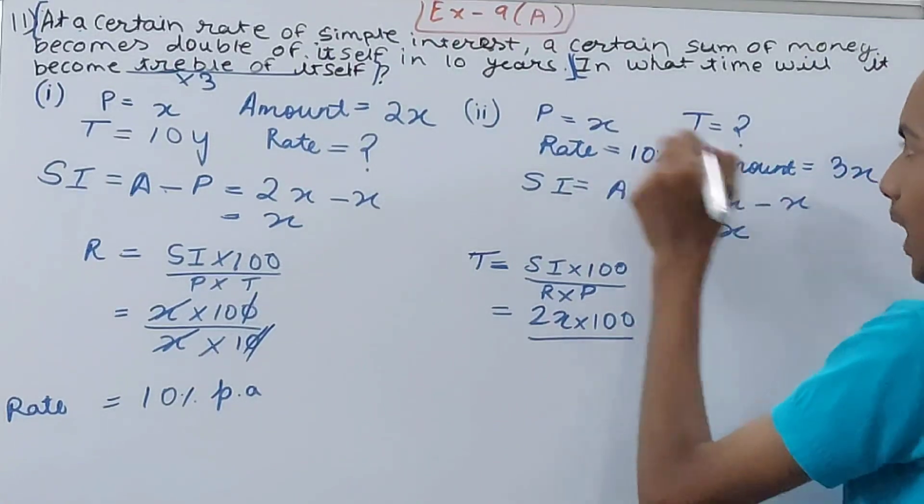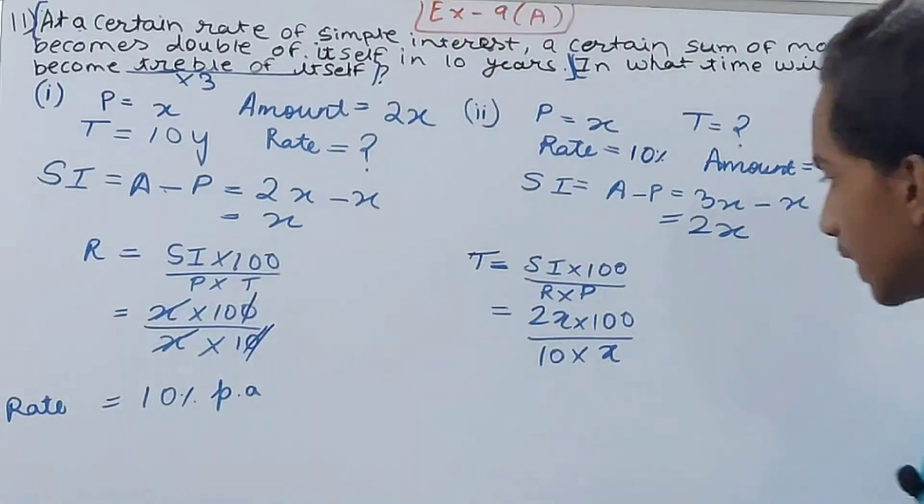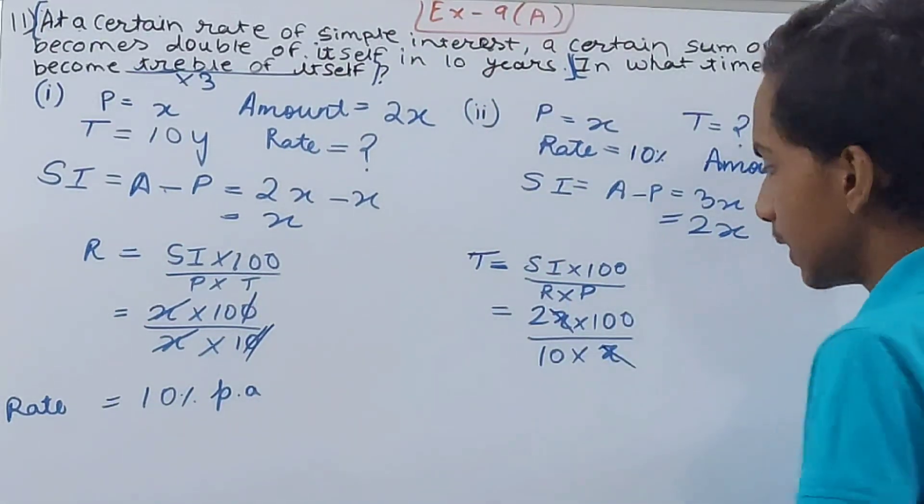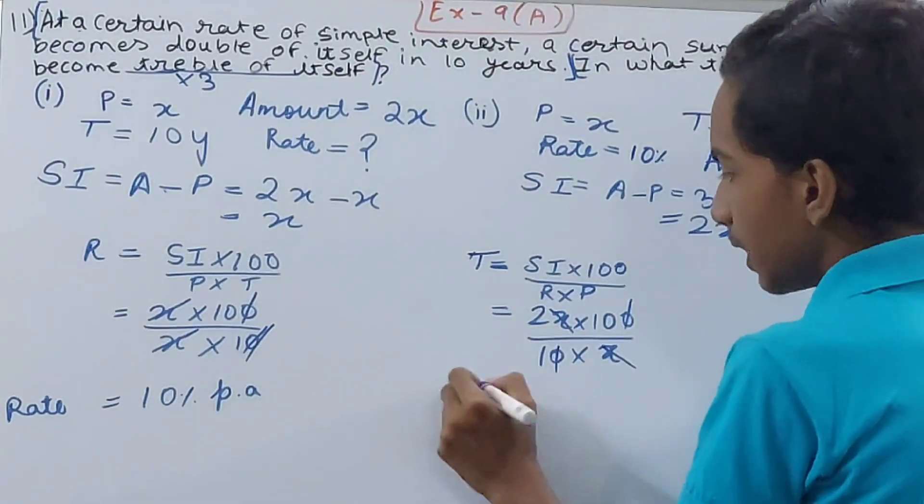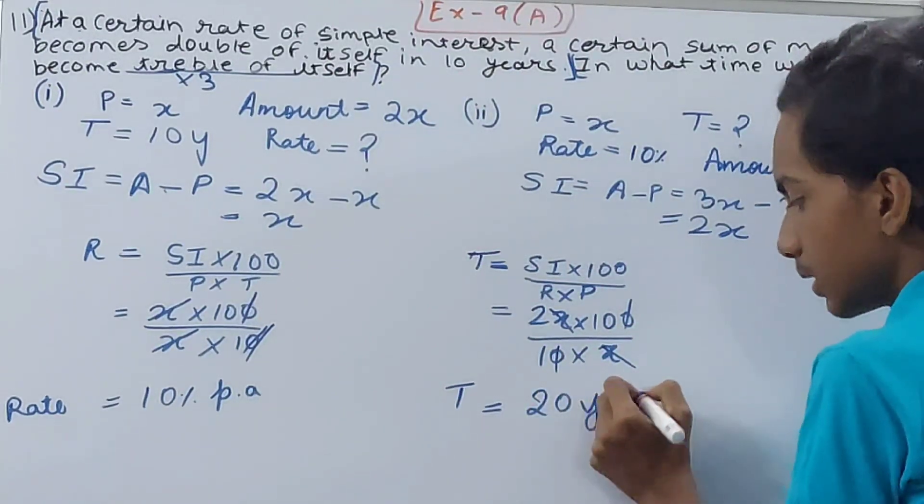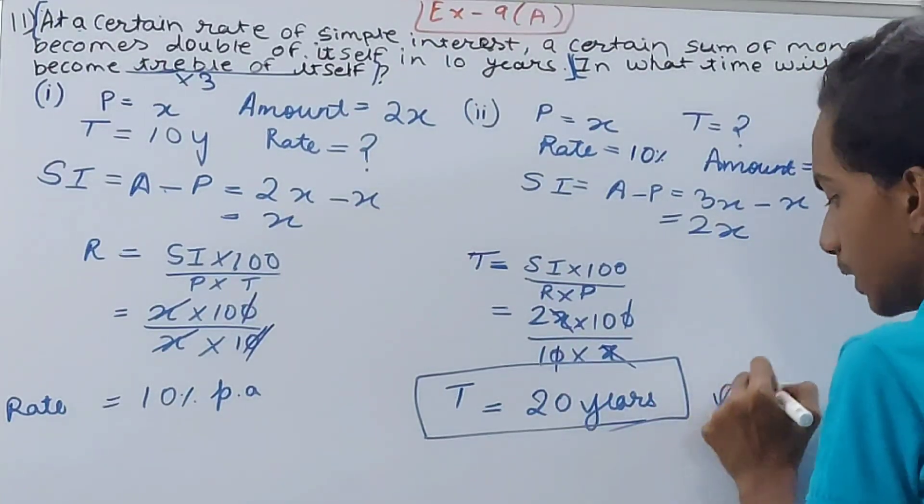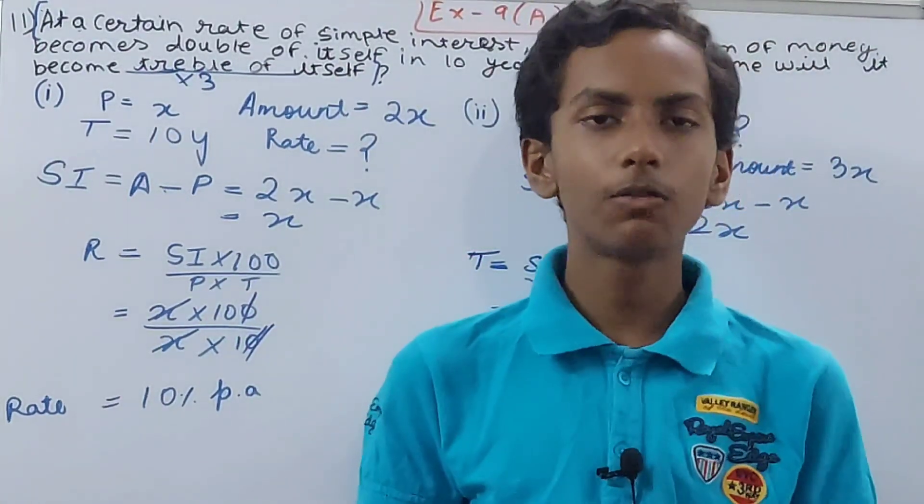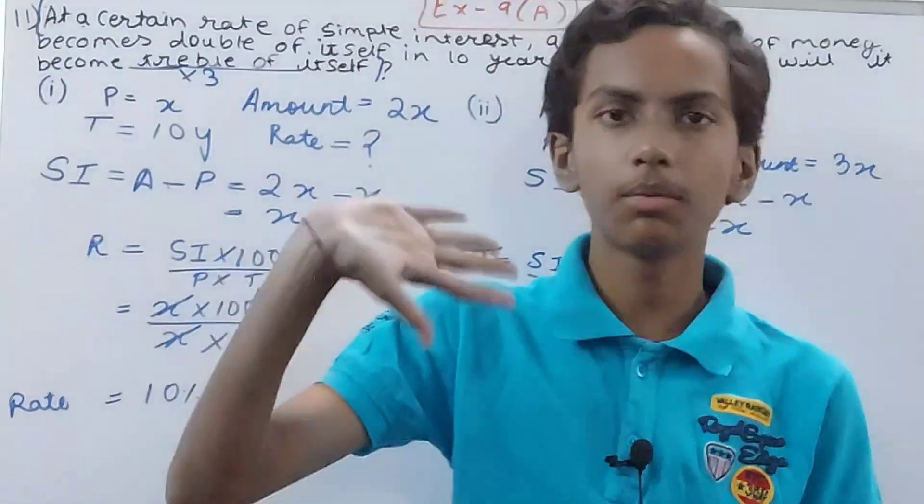Again we can clearly see, I'll cancel this x, I will cancel this x, I will cancel this 0, I will cancel this 0. So what do we get? Time is 2 into 10, 20 years. That is your answer, 20 years. And friends, this is all for today. If you are new to my YouTube channel, do not forget to subscribe and leave a like on this one. Till then, take good care of yourselves and bye.